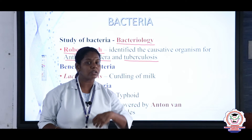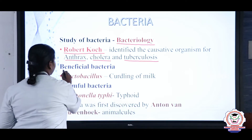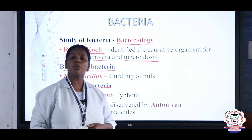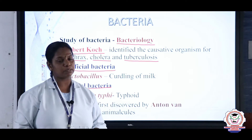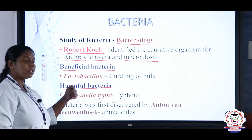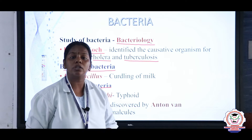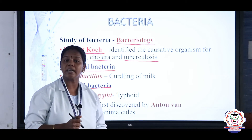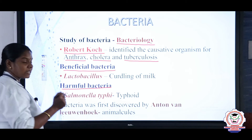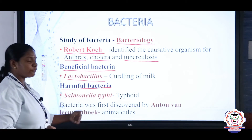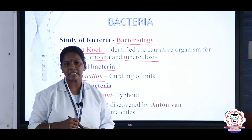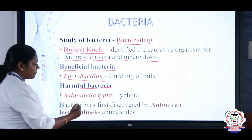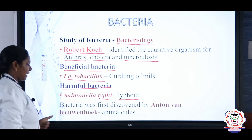Based on their uses, bacteria are classified into two types: beneficial bacteria and harmful bacteria. Beneficial bacteria are useful — for example, the bacterium Lactobacillus helps in curdling milk to make curd. Harmful bacteria cause diseases. For example, Salmonella causes typhoid — from the name itself it is clear it causes typhoid.